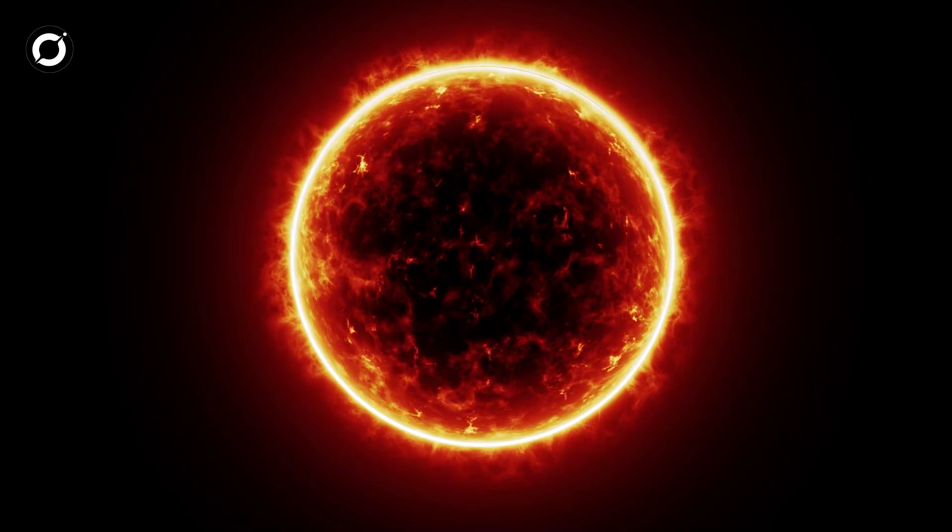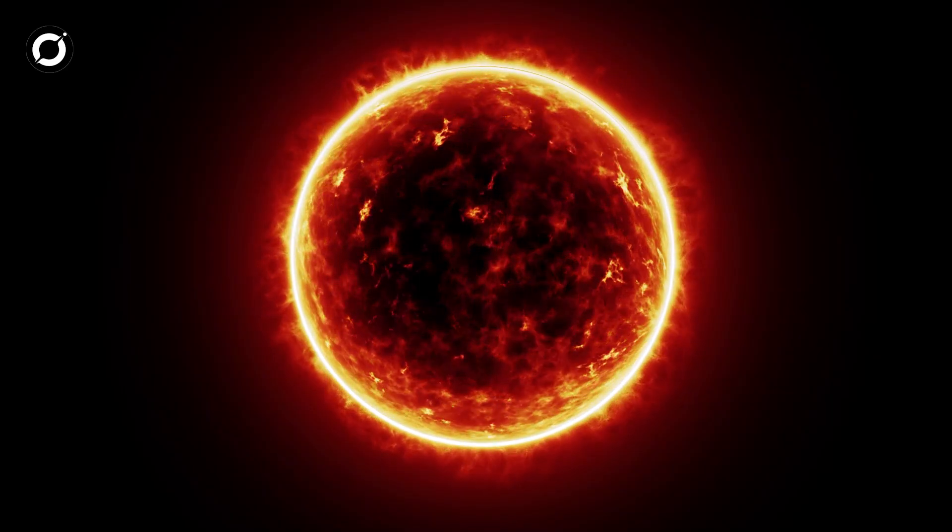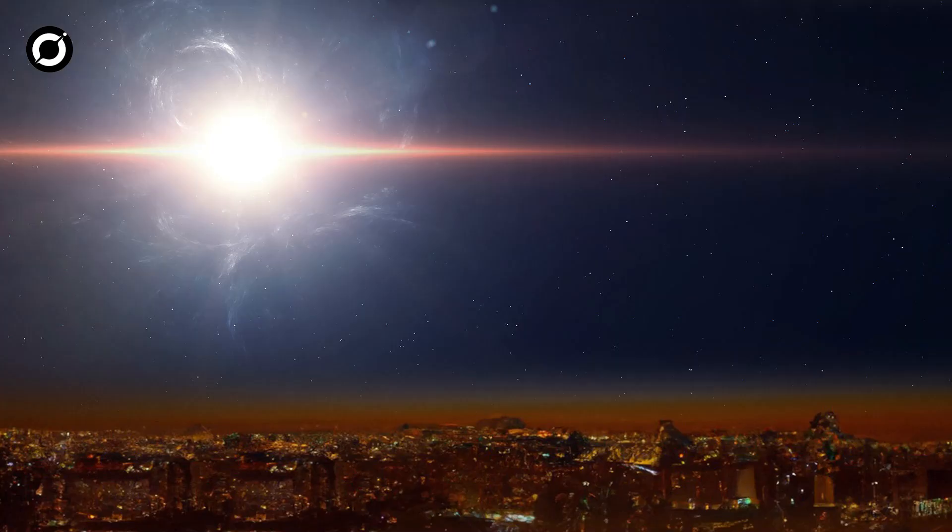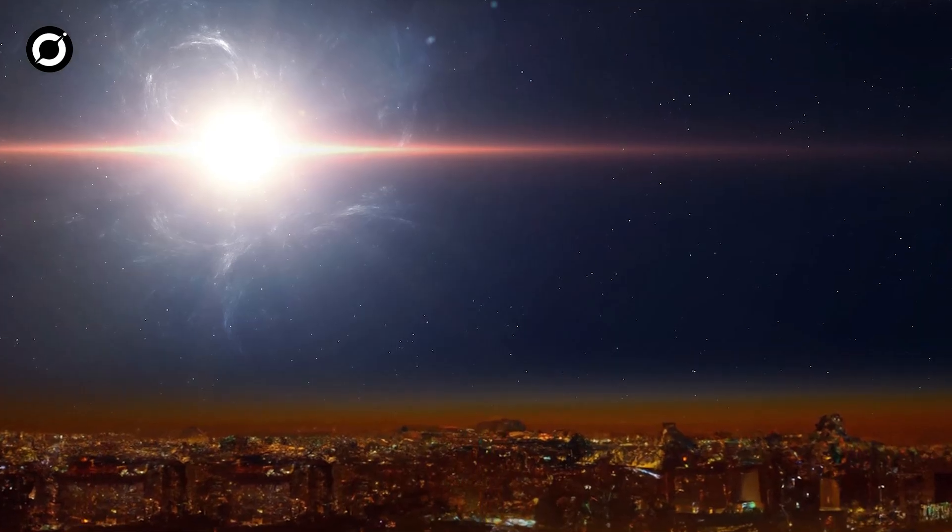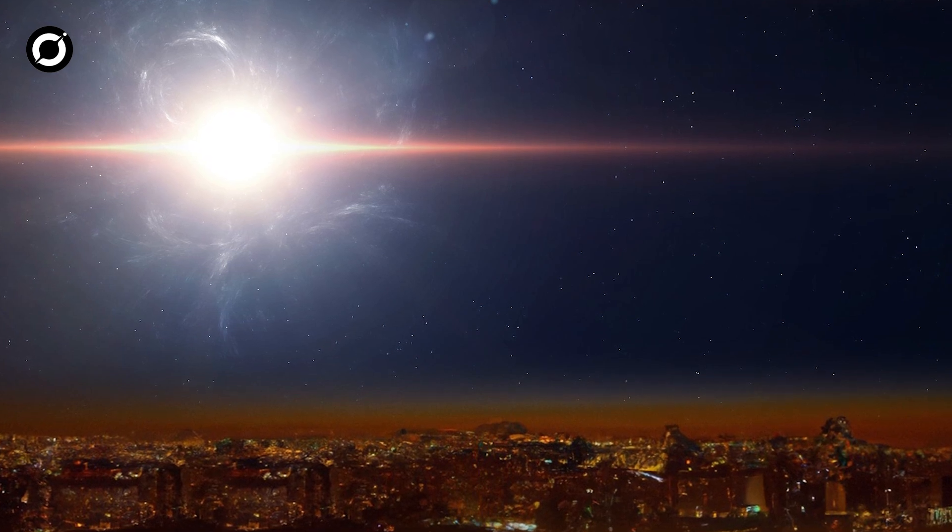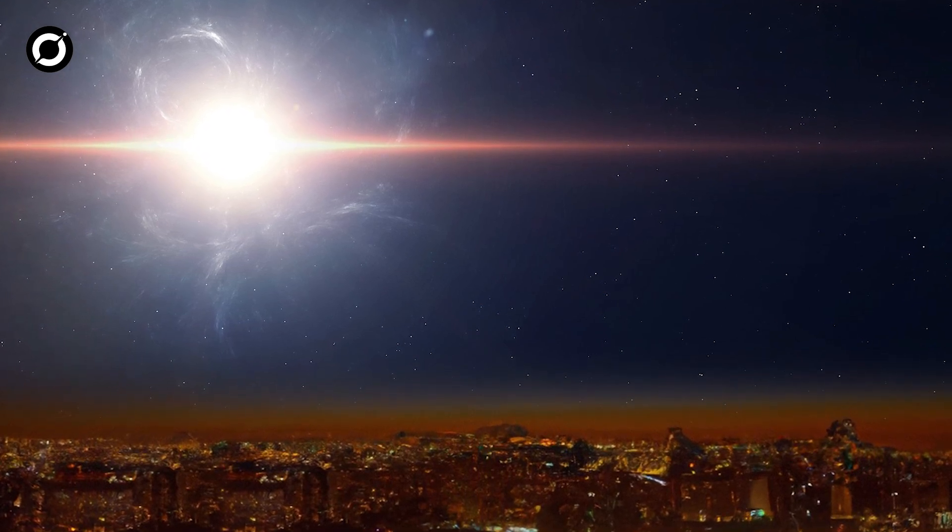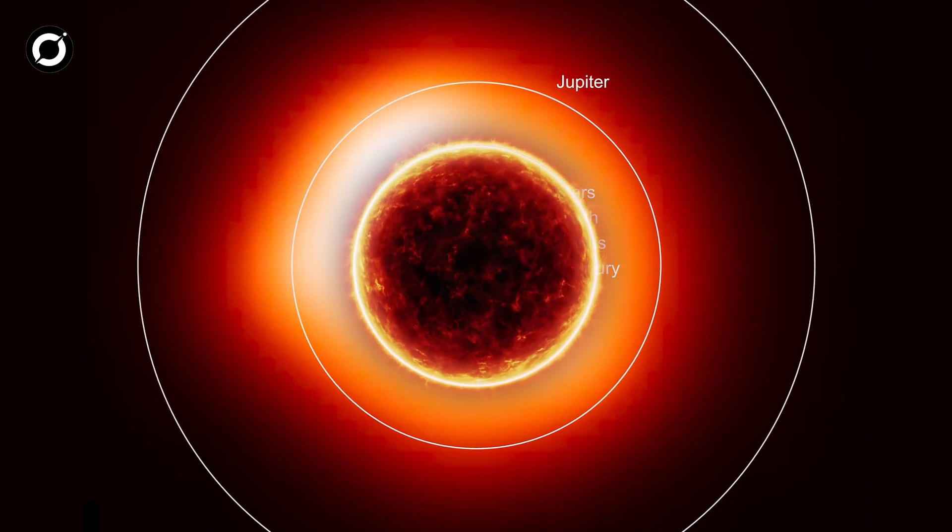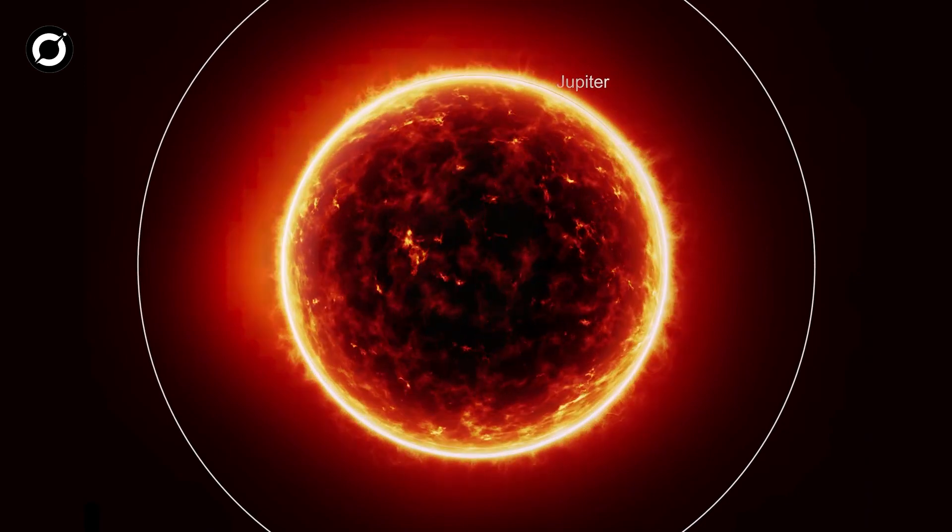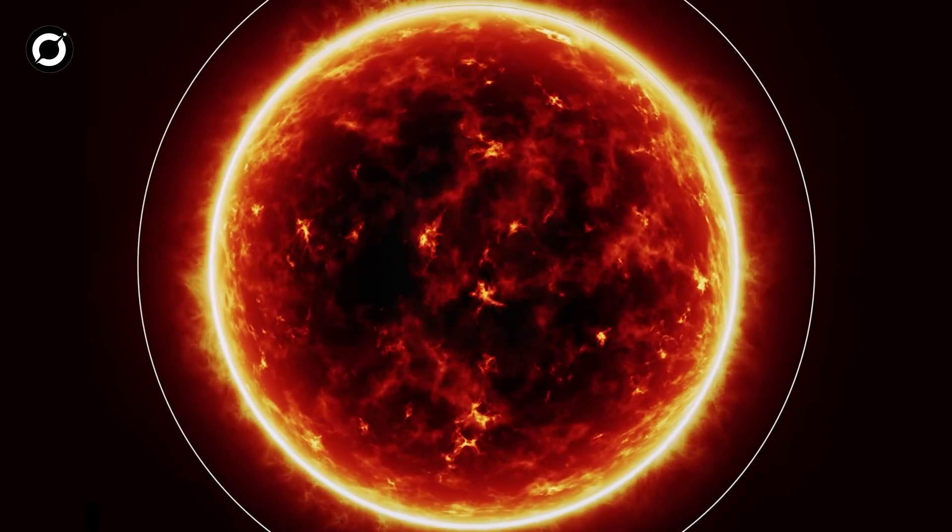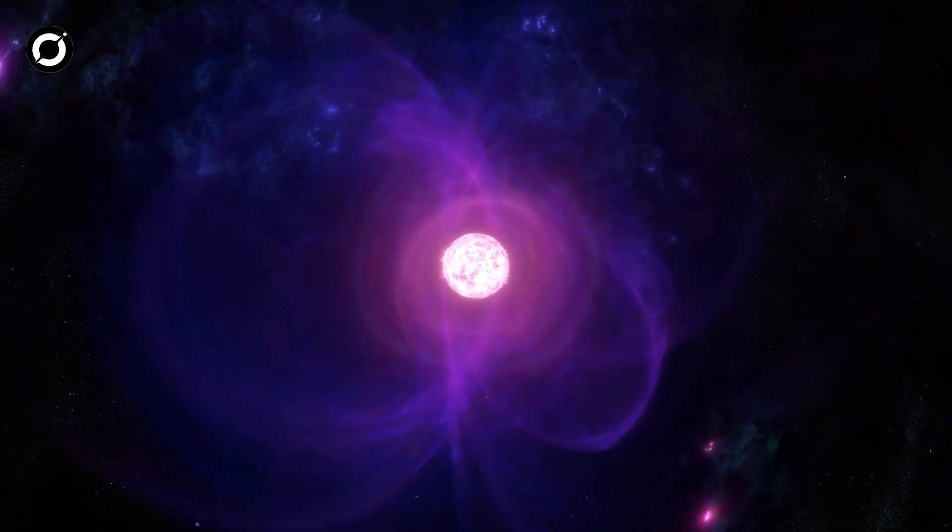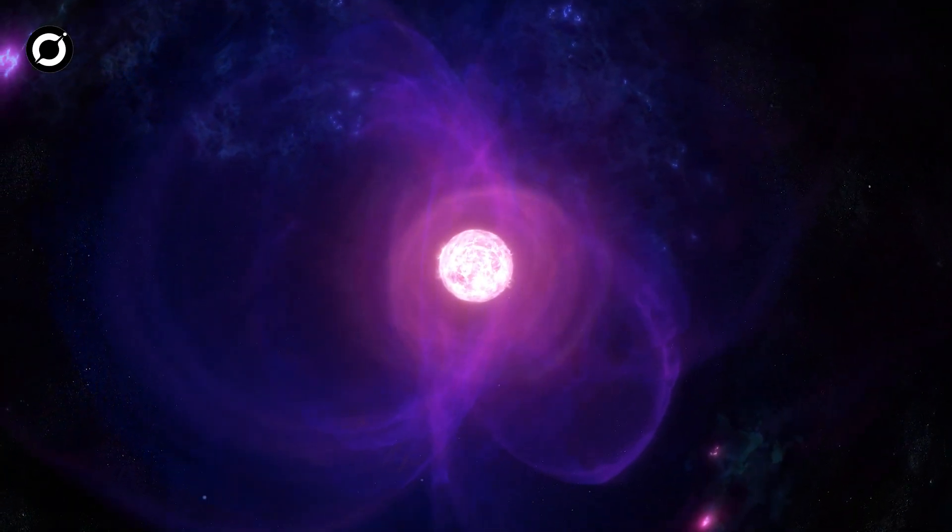Now Betelgeuse is a true giant, with a diameter more than one thousand times that of our sun. If Betelgeuse explodes, it'll be so bright that you'd see it during the day for a whole year. If you placed it at the center of our solar system, it would engulf the inner planets, including Earth and go all the way up to Jupiter. Its immense size and mass make it a red supergiant star nearing the end of its life.